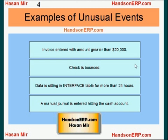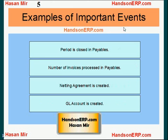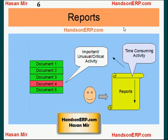So we understand that one might be interested in keeping an eye on unusual events and important events. One way of keeping an eye is to run related reports and scan through them to find out if there is unusual or important activity going on. But this is no doubt a time-consuming task because you have to scan through all the reports — the report contains all the data, both regular data and important or unusual data.